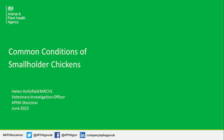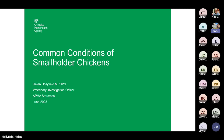Our next speaker is Helen Hollifield, who will be talking about smallholder poultry diseases. Helen graduated in 1997 and worked in practice before working for APHA in varying roles including as a veterinary investigation officer. She has an MSc in veterinary epidemiology and public health and joined Starcross as a VIO last year.